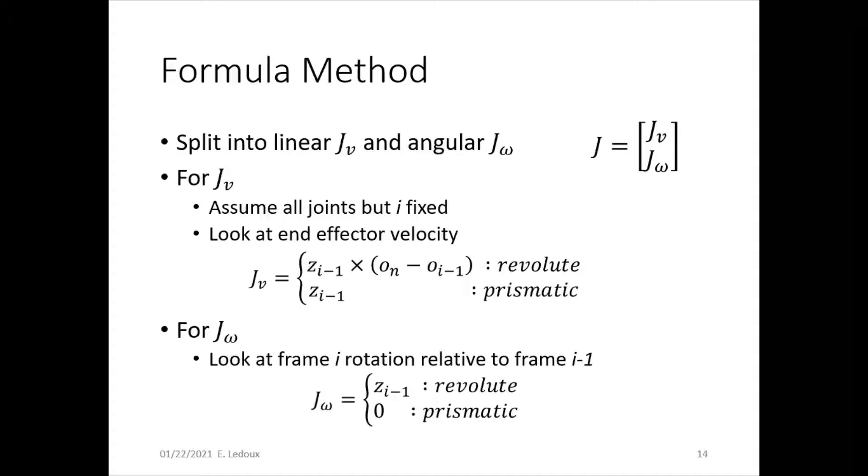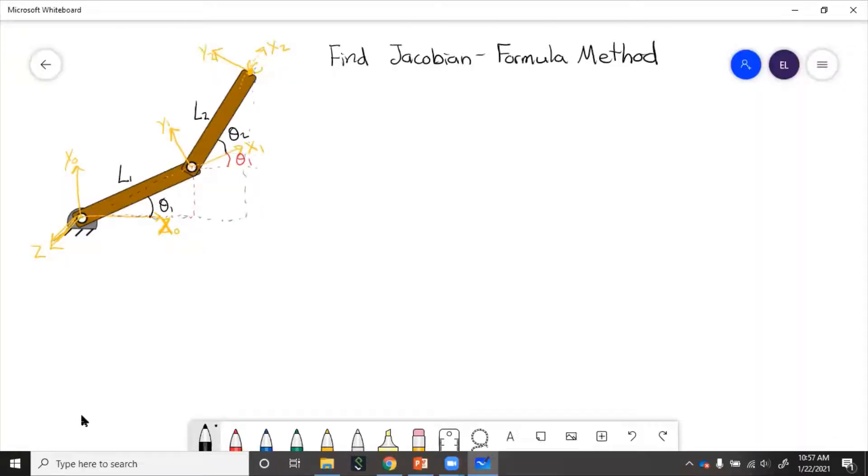So now let's look at an example of how to calculate this. We need to find the Jacobian for this two-link robot using the formula method. Step one is find all of the joint origins, and all of these are in the zero frame. Step two is find the z-axis vectors, also given relative to the zero frame.